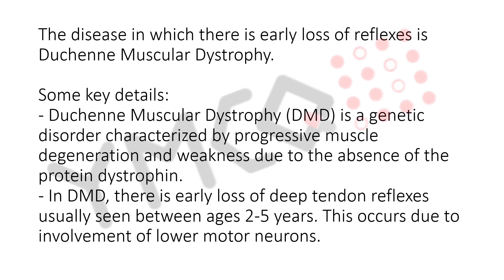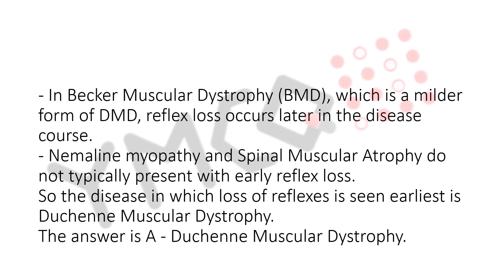In DMD, there is early loss of deep tendon reflexes, usually seen between ages 2 to 5 years. This occurs due to involvement of lower motor neurons. In Becker muscular dystrophy (BMD), which is a milder form of DMD, reflex loss occurs later in the disease course.